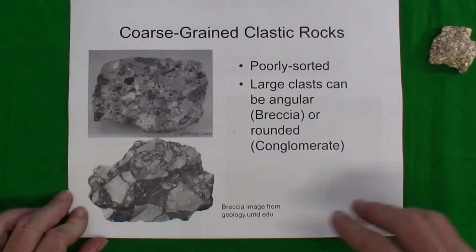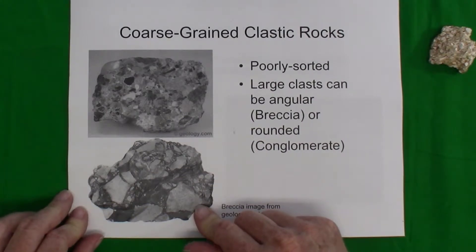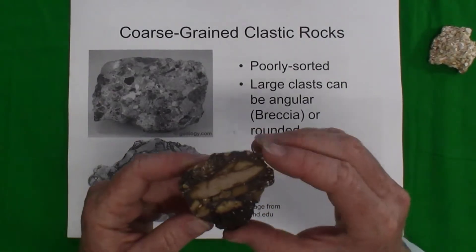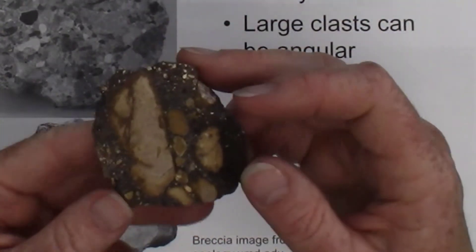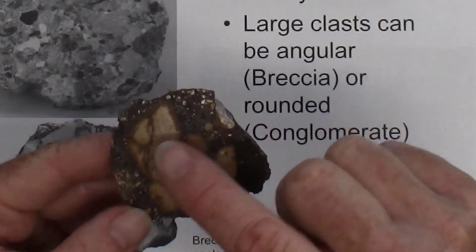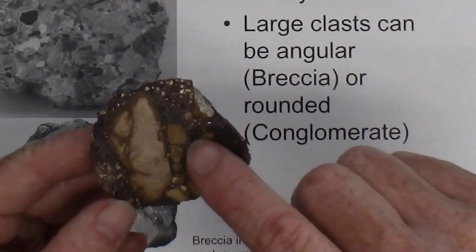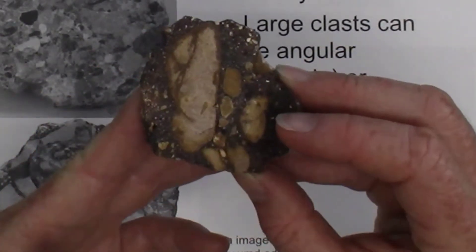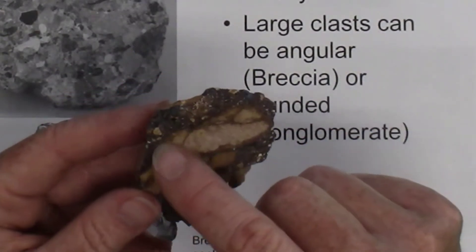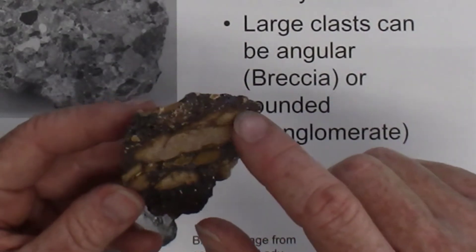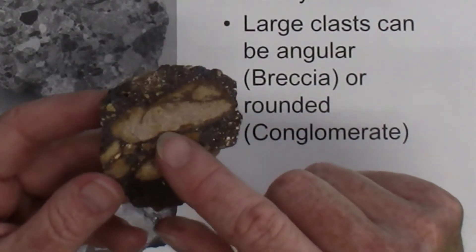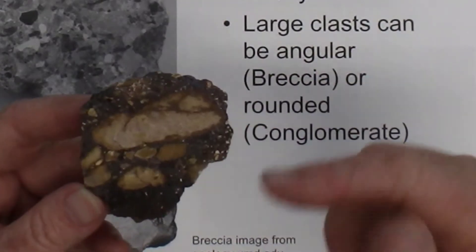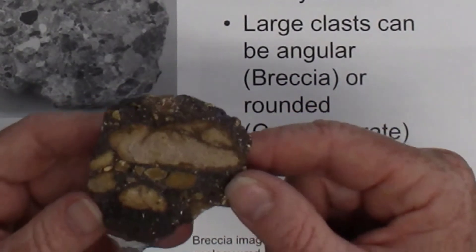If it's a clastic rock but there are a significant number of particles much larger than sand-sized, then it's either conglomerate or breccia. Conglomerate is a poorly sorted clastic sedimentary rock. As you can see, the rock contains clasts of varying sizes — some pebble-sized, some sand-sized, and some particles too small to distinguish with the naked eye. Notably, the pebbles within the rock don't have many sharp edges or corners, indicating the sediment was transported some distance, likely tumbled in a stream before becoming a rock.